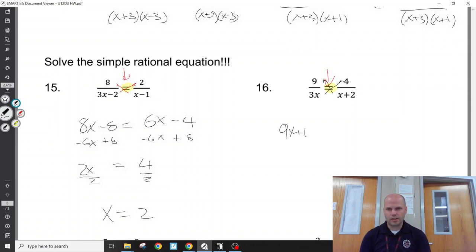9x plus 18 equals 12x. I have more x's on this right side, so I'm going to subtract 9x's from that side. I get 18 equals 3x. Divide by 3. Divide by 3. 3x equals 6.